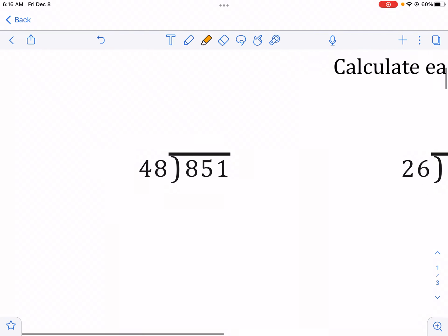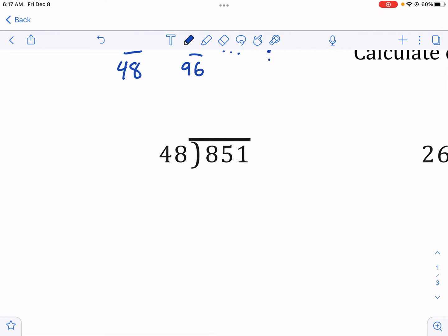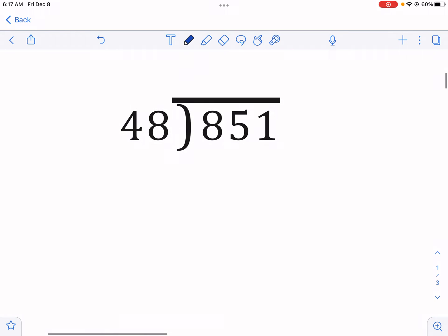As we do this problem, we're essentially seeing how many times can we have 48 fit into 851. And when I say fit into, I'm talking about skip counting. So 48 would be the first one, 96 would be the second one. The way to do this is relatively simple. We're just going to see how much 48 can fit into each one of these digits at a time. So if we talk about 48 into 8, it does not fit into that number. So what we're going to do instead is we're going to see how much it fits into 85.